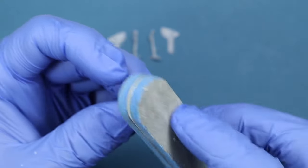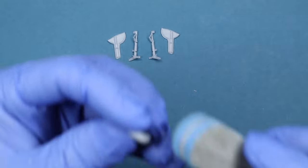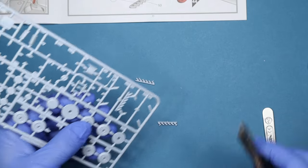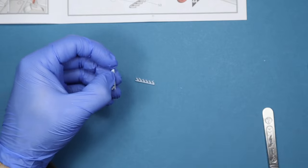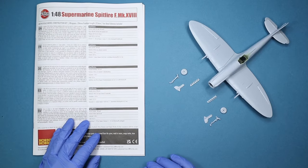Now finish with the exhaust, and that wraps up the airframe construction. You should be left with a lump of plastic resembling a Spitfire.